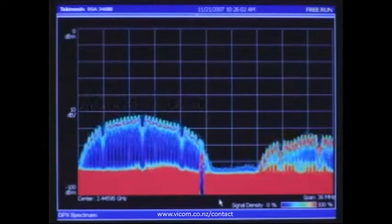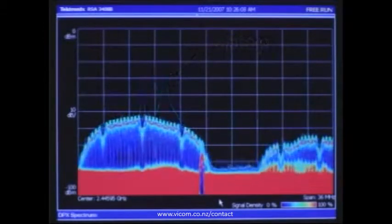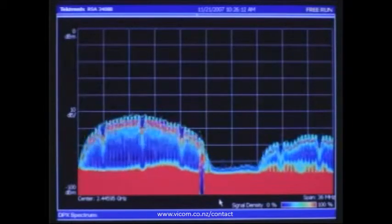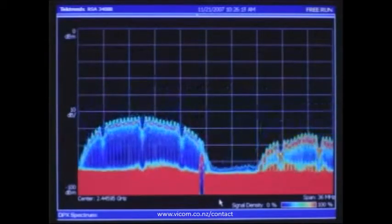Occasionally, you'll see a signal appear above it that doesn't last very long. Those are laptops communicating with the access point. DPX is able to show you both the access point and the laptops because everything in the bandwidth can be captured when processing happens fast enough.